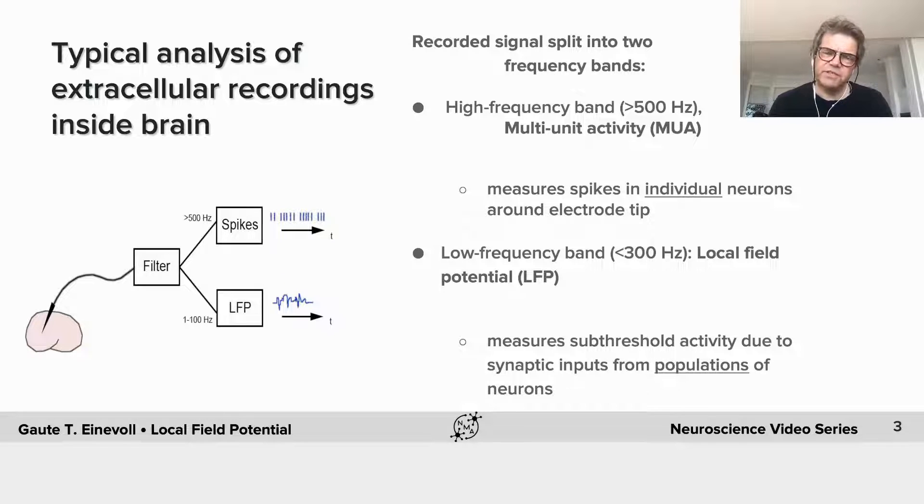Because it measures sub-threshold activity due to synaptic inputs from populations of neurons. So you cannot just look at the signal and say this sort of bump comes from this particular synaptic input. You have to do a little bit more prior analysis to interpret it in terms of neuronal activity.